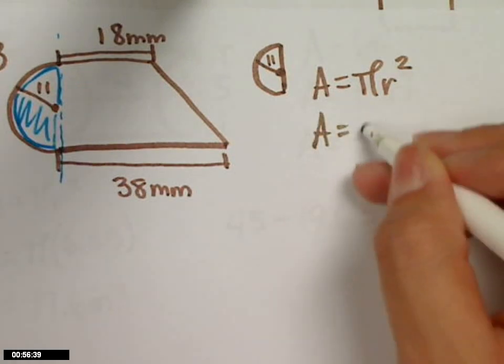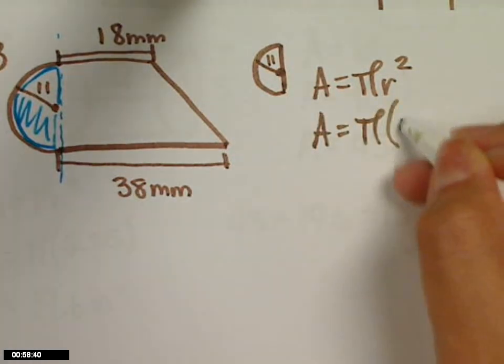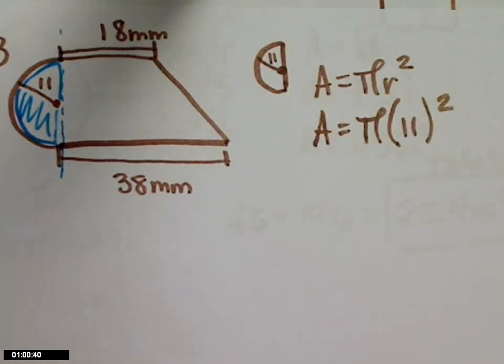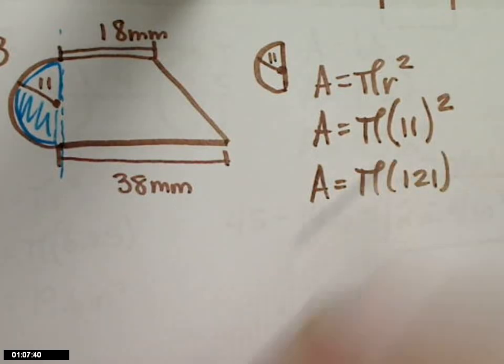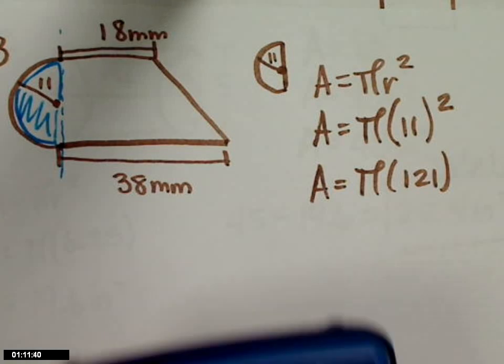Area equals pi times radius squared. What's 11 squared? 121.